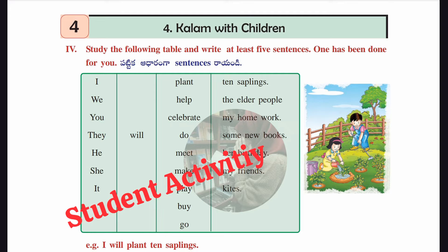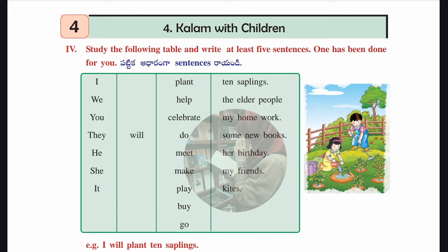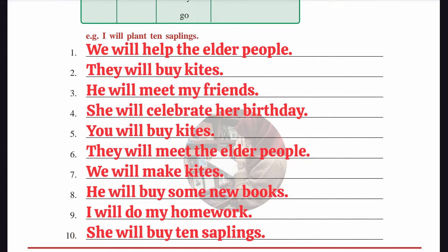The fourth section of worksheet 4.4: study the following table and write at least five sentences. One is done for us — I will plant ten saplings. More sentences: we will help the elder people; they will buy kites; he will meet my friends; she will celebrate her birthday; you will buy kites; they will meet the elder people; we will make kites; he will buy some new books; I will do my homework; she will buy ten saplings.